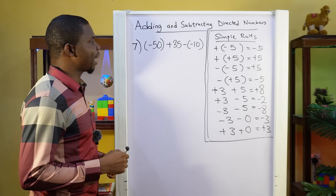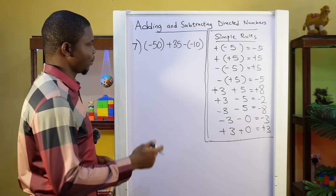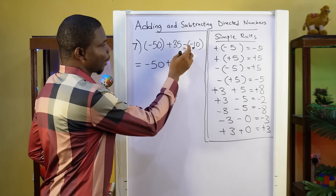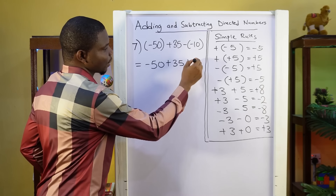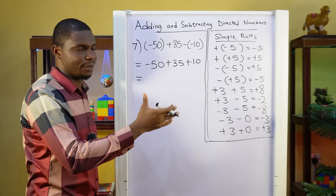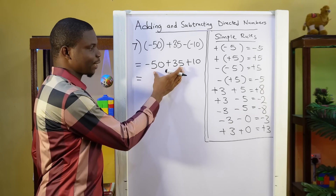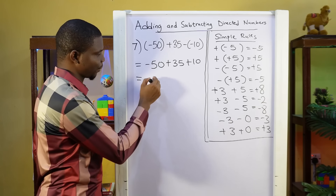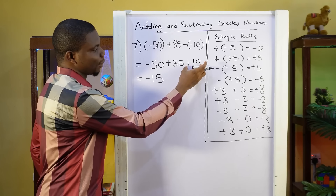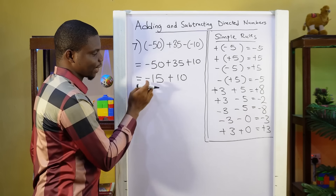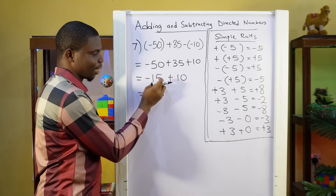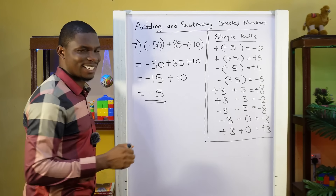Question 7: minus 50 plus 35 minus minus 10. First we open the brackets: minus 50, plus 35. Minus changes the sign inside the bracket, so that will be plus 10. We take them two at a time: minus 50 plus 35 — different signs, so we take the difference: 50 minus 35 is 15, and this takes the sign of the bigger number, giving minus 15, then plus 10. Different signs again: 15 minus 10 is 5. It takes the sign of the bigger number, which is minus. So the answer is minus 5.